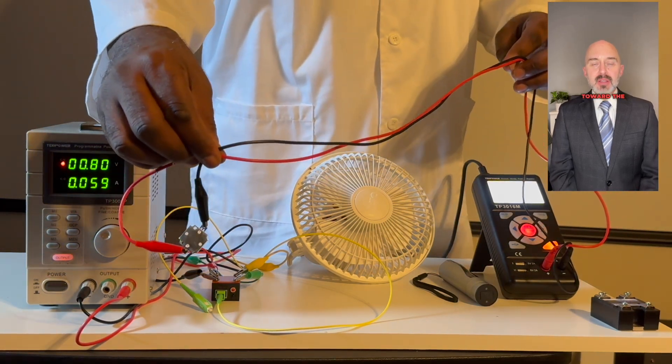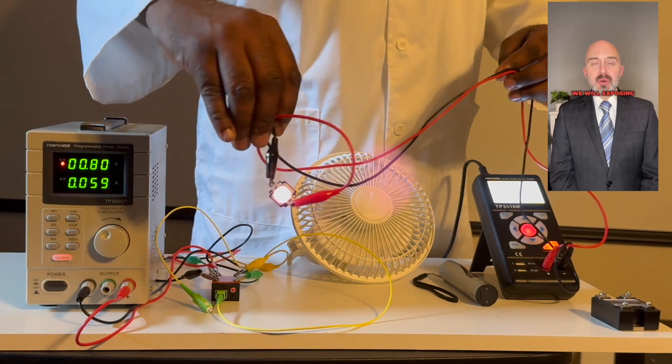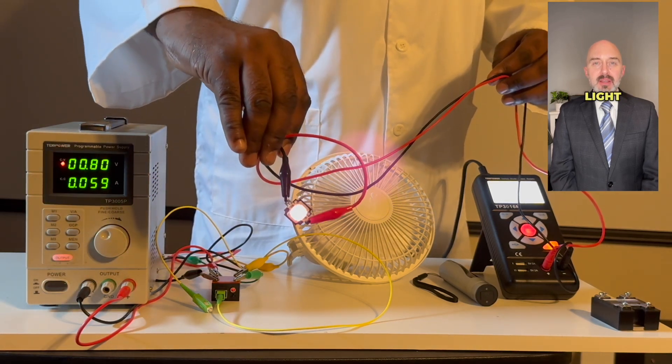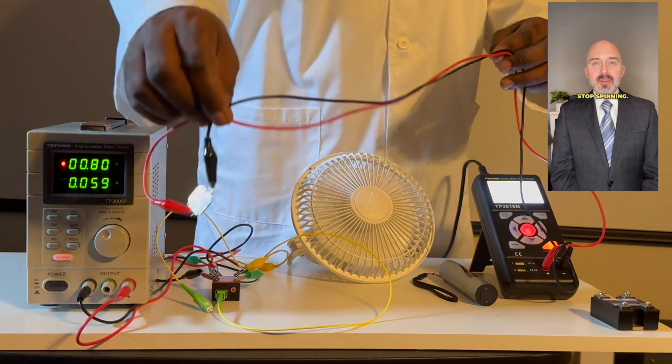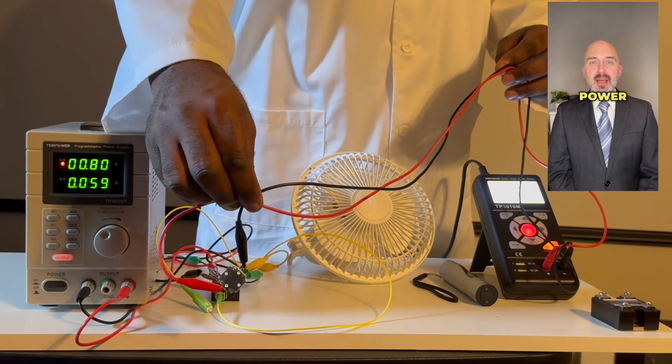As we point the chip toward the camera, you can see the infrared light emitted from the chip. We will expose the relay to the infrared light again, and you can see the fan stop spinning. Once the infrared light is removed, the relay sends power back to the fan motor.